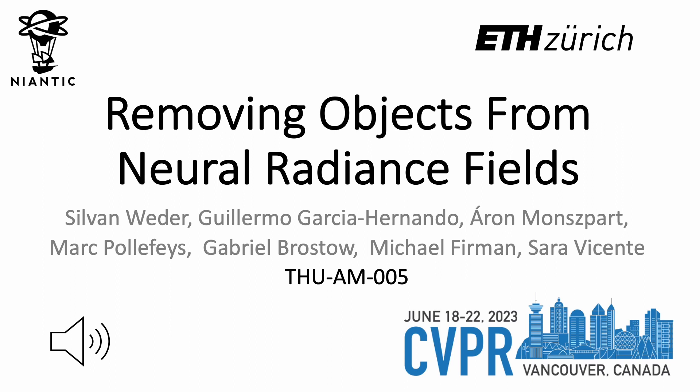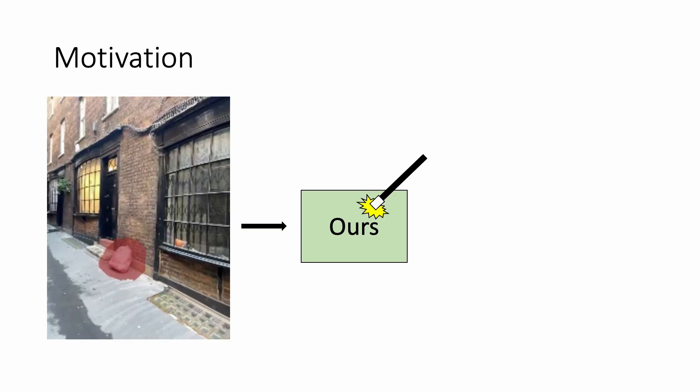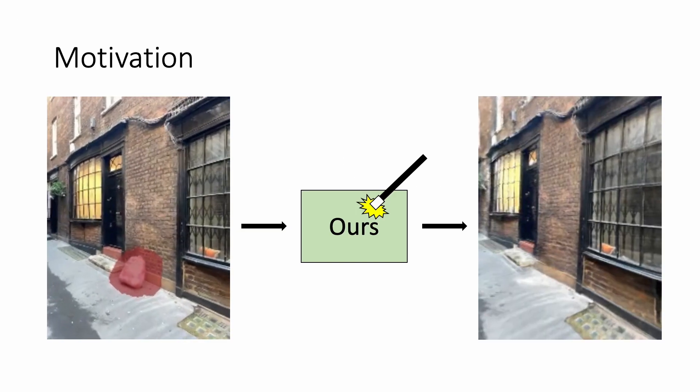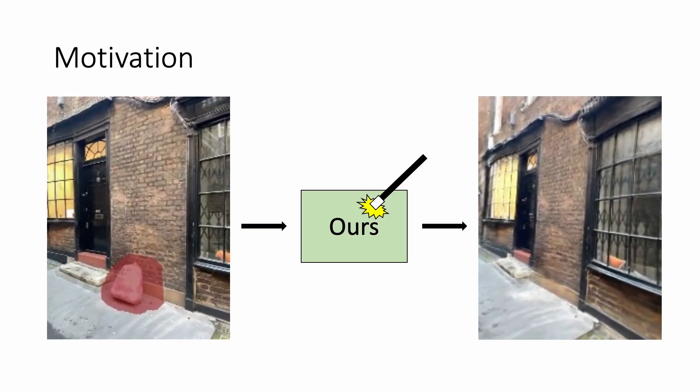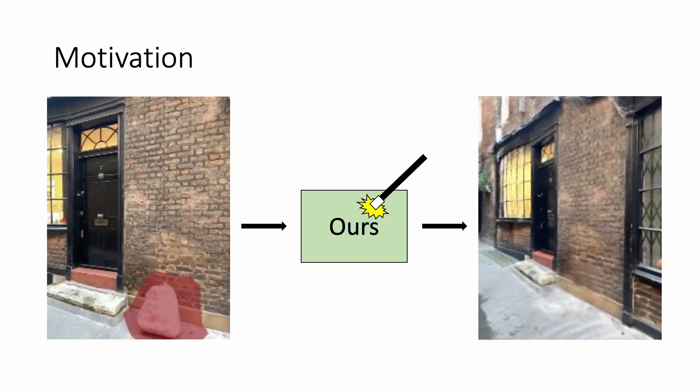We present a method for removing objects from neural radiance fields. Given an RGB-D scan with unwanted objects, our method produces clean novel view renderings without the unwanted object.